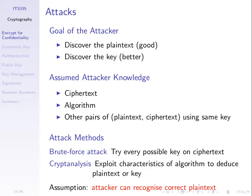There are two basic approaches for the attacker. A brute force attack tries to find the key by trying all possible keys — one of them will be the correct key and will give the plaintext. The other approach is cryptanalysis, which is more intelligent. We try to take advantage of characteristics of the algorithm — some weaknesses perhaps — and try to work out what the plaintext or key is.